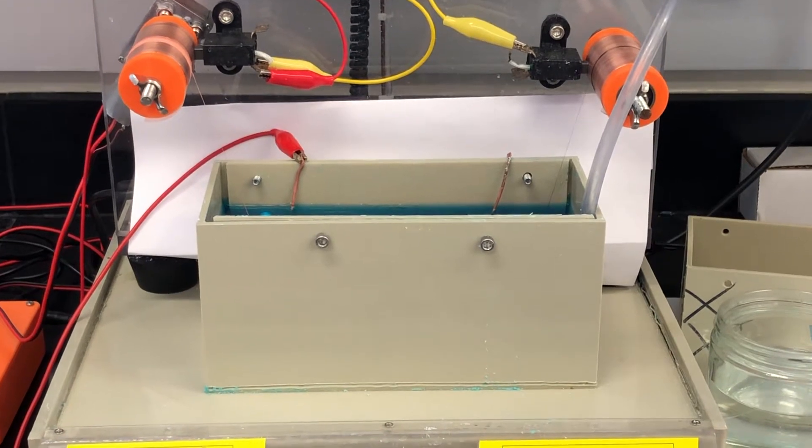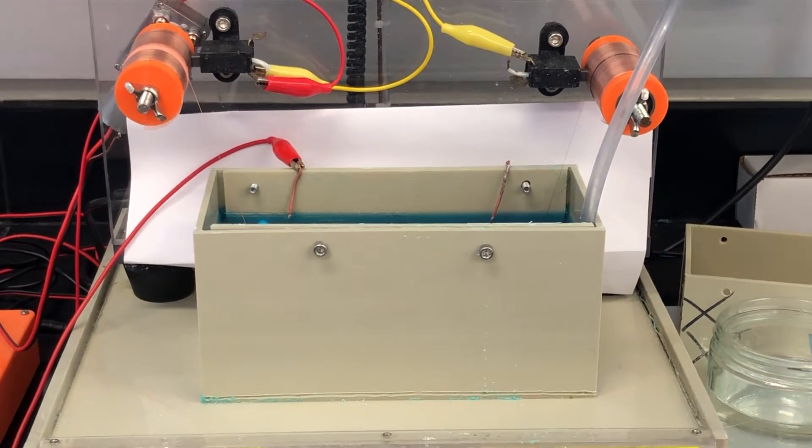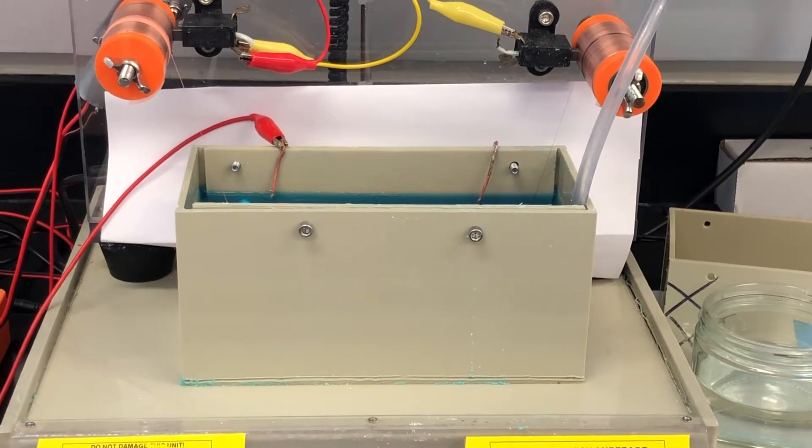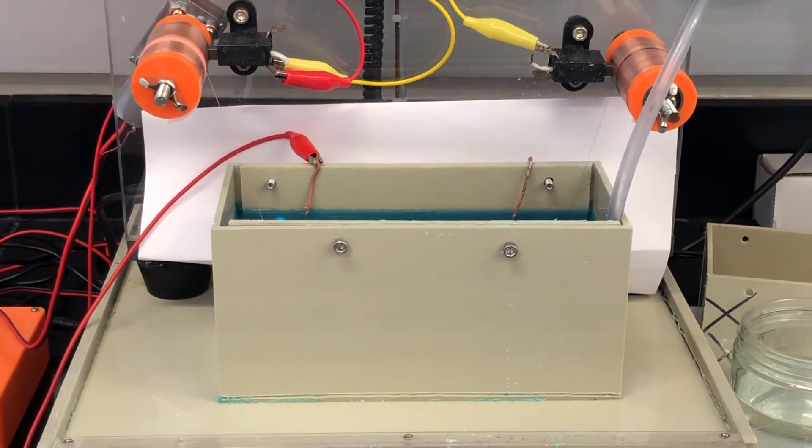So here we have an apparatus that allows us to continuously plate a long length of carbon nanotube yarn with copper through an electroplating process.